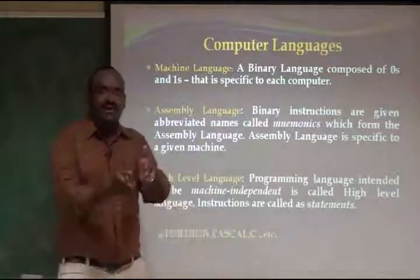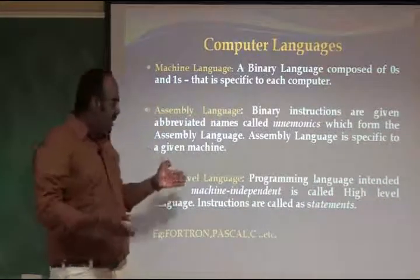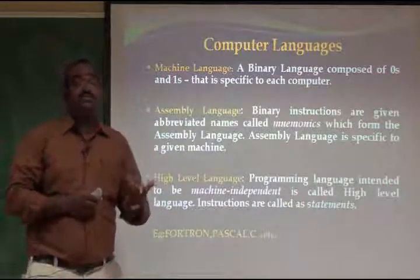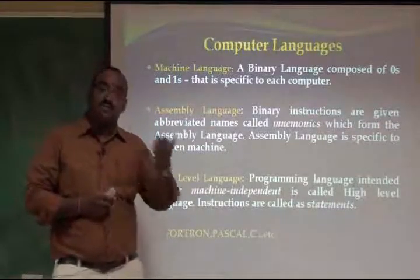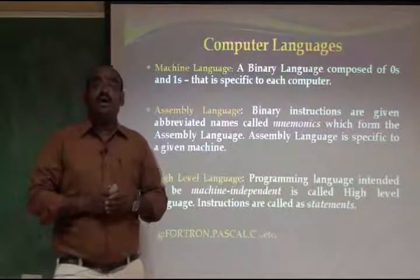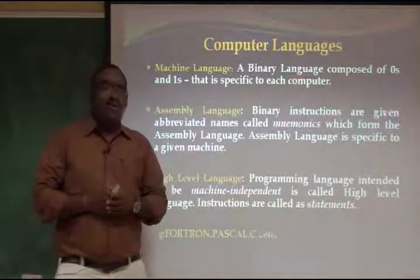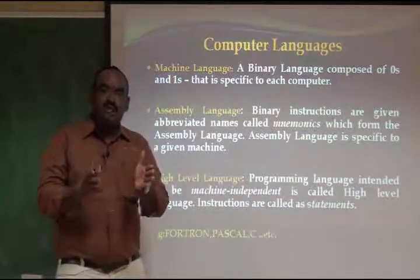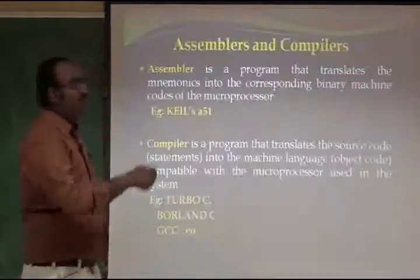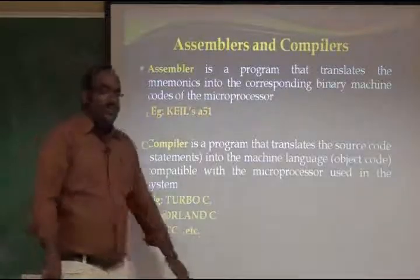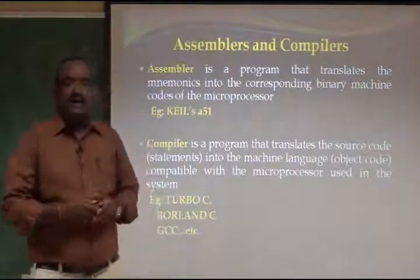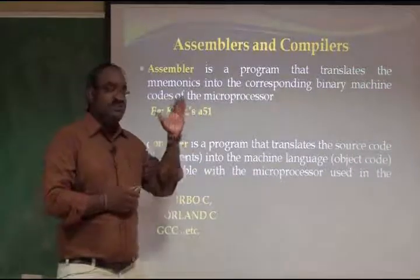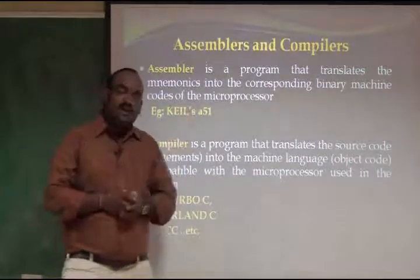C is a combination in between assembly language and high-level language. That is why C programming is very useful to write system software as well as business execution programs. All types of problems can be solved through C programming. The processing of these languages — how the machine understands them — is done by assemblers and compilers.